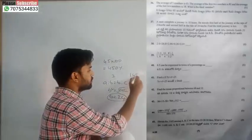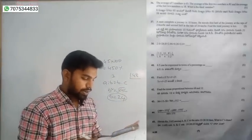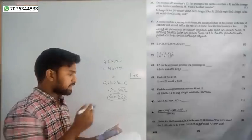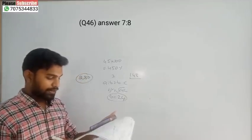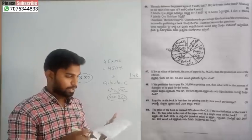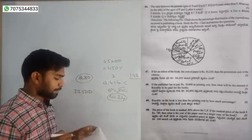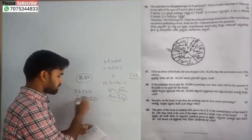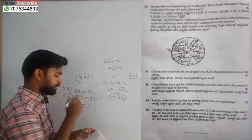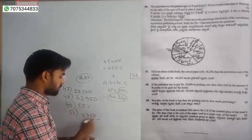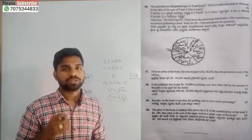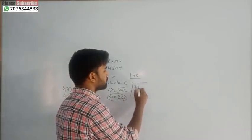Question number 43: answer is 148. Question number 44: answer is 4. Question number 45: answer is 280. Question number 46: ratio is 7 to 8, that is 60 to 70. Question number 47: answer is 22,500. Question number 48: answer is 22,950. Question number 49: answer is 1. Question number 50: answer is 3.